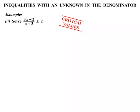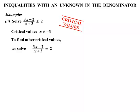For the next example we need to solve 3x minus 2 over x plus 3 less than or equal to 2. Again we consider the critical values. The first one is when the denominator equals 0: x plus 3 cannot equal 0, so x cannot equal minus 3. To find the other critical value we rewrite the inequality, changing the less than or equal to sign to simply an equals sign.